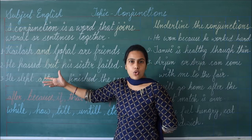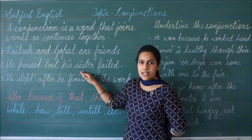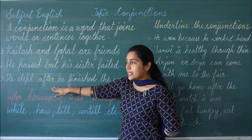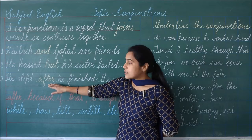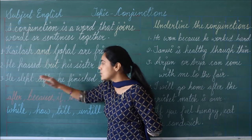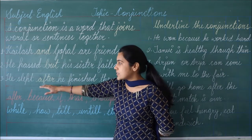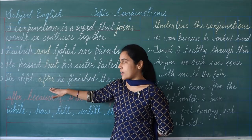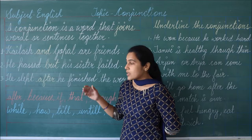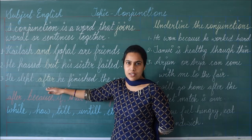एक contrast show करने के लिए — जो मैंने पहले बोला है और जो second sentence में बोला है वो दोनों एक दूसरे के opposite हैं. Then in the third sentence, मैंने 'after' word का use किया है first sentence और second sentence को join करके. वो सो गया और उसने अपना काम पूरा किया — इन दोनों बातों को relate करने के लिए मैंने 'after' word का use किया है.